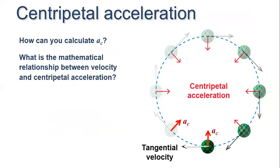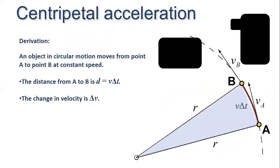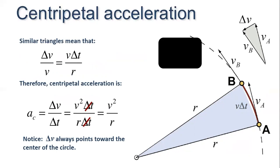How can you calculate centripetal acceleration ac, and what is the mathematical relationship between velocity and centripetal acceleration? The relation is ac = v²/r. We can derive this by observing a diagram: at point A the velocity is vA, at point B the velocity is vB, and from A to B the distance is d.